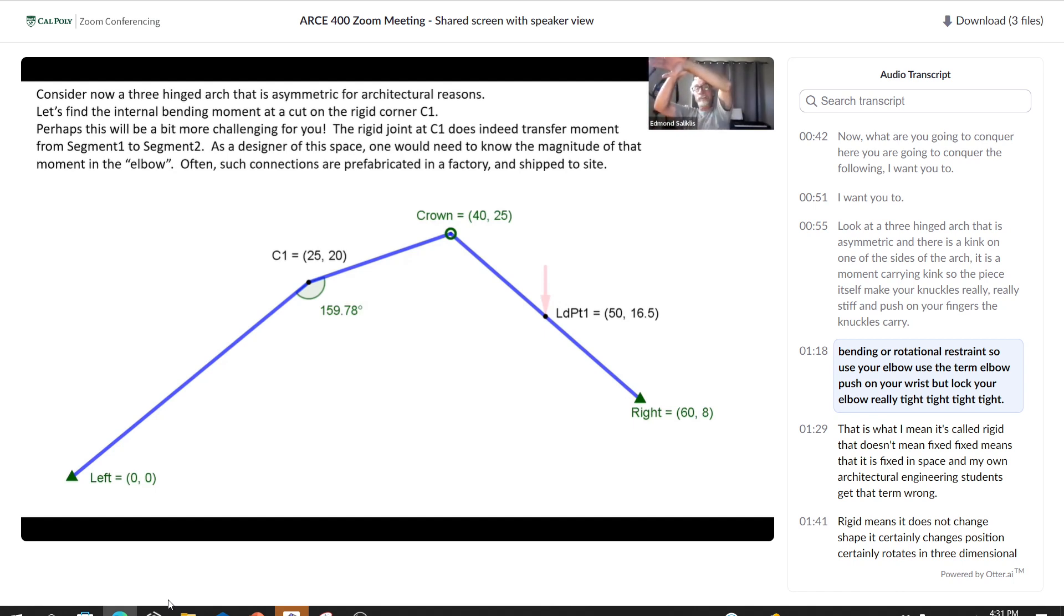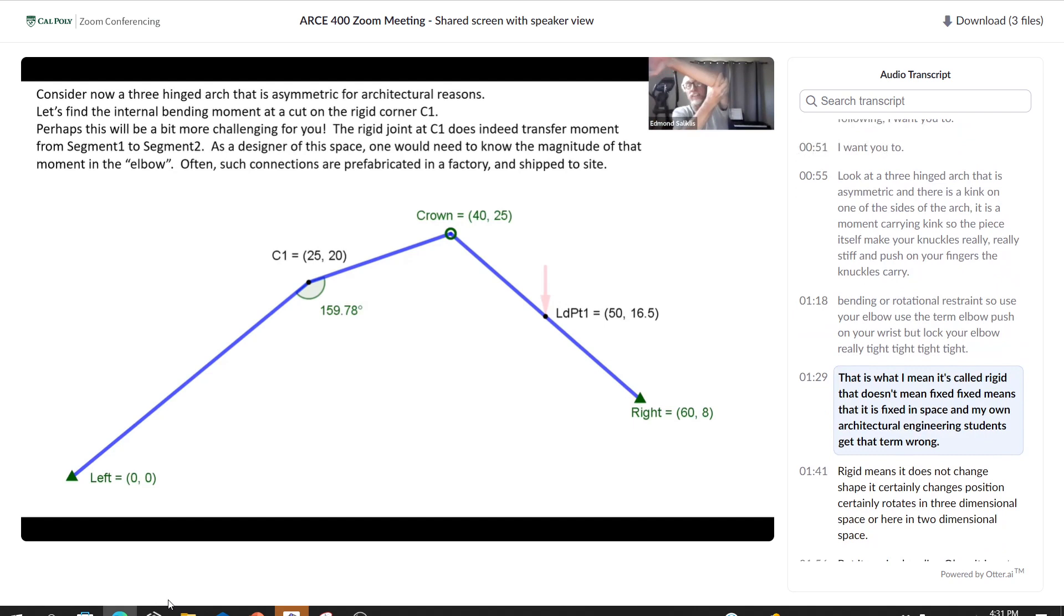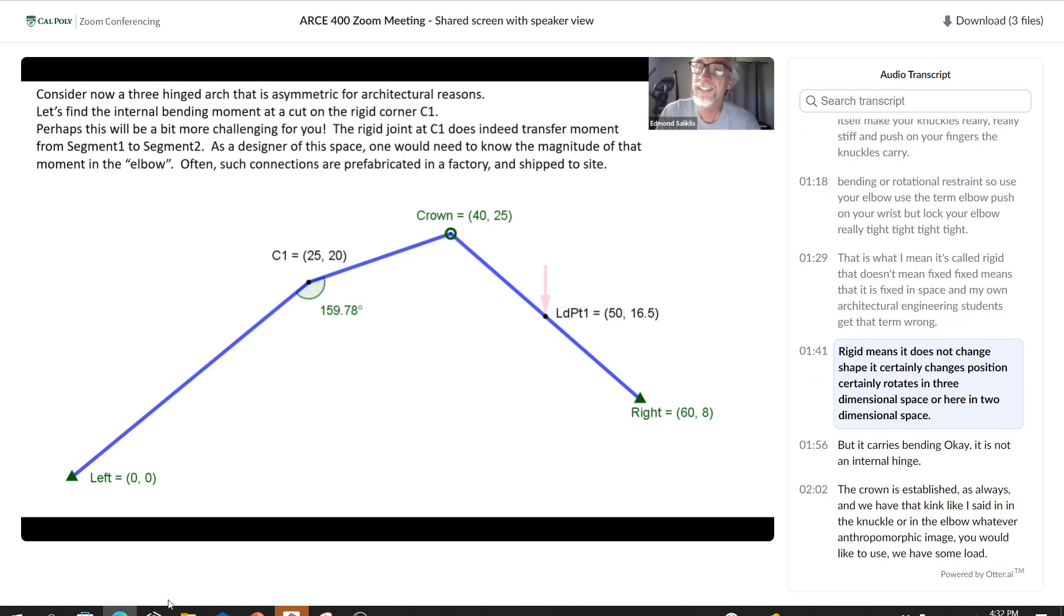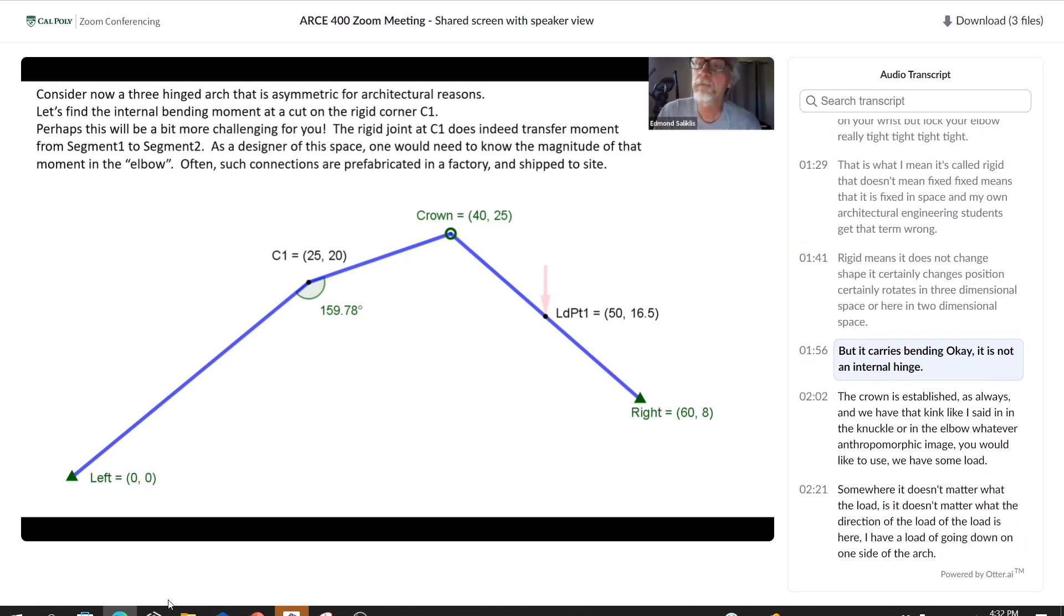Push on your fingers, the knuckles carry bending or rotational restraint. I use the term elbow. It's called rigid. That doesn't mean fixed. Fixed means that it is fixed in space. Rigid means it does not change shape. It certainly changes position, it certainly rotates in three-dimensional space or here in two-dimensional space, but it carries bending. It is not an internal hinge.